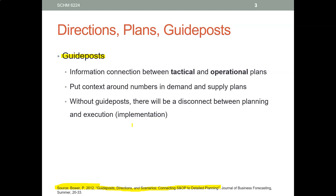What are guideposts? Guideposts are like connective tissue that help you go from a tactical plan to an operational plan. This is very difficult to do if you just work off of numbers. If somebody says 'here's your numerical plan, go break this down,' it's very difficult to make meaningful decisions simply based on numbers. What guideposts do is put context around these numbers.